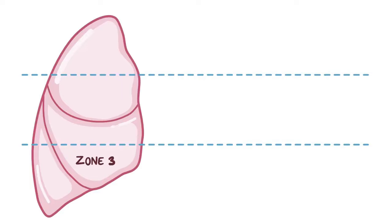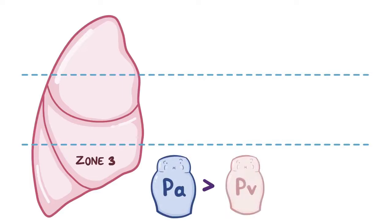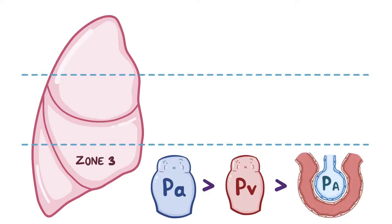In Zone 3, at the base of the lungs, pressure in the arterioles is higher than in the venules, but both are higher than the pressure in the alveoli. Blood flows through the capillaries because of the pressure difference between the arterioles and venules. Even though the pressure in the arterioles and venules exceeds the pressure in the adjacent alveoli, the proteins and cells that make up the walls of the alveoli are strong enough to resist collapsing.